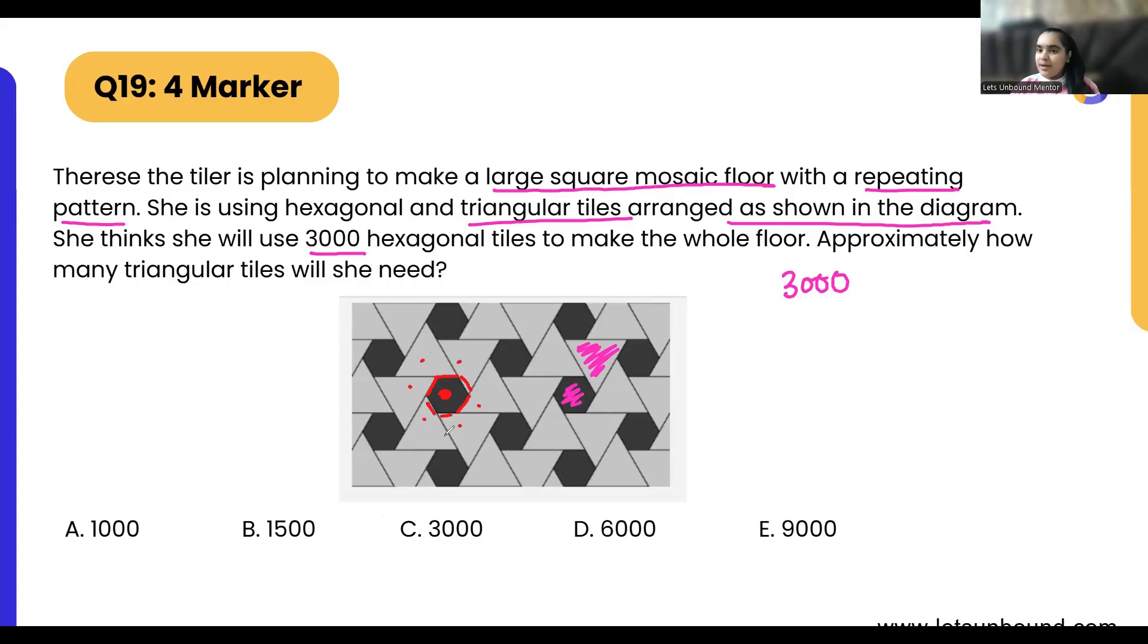So can we say from here, if we are going to use 3000 hexagons, it will be attached with 3000 times 6, that is 18,000 triangular tiles?